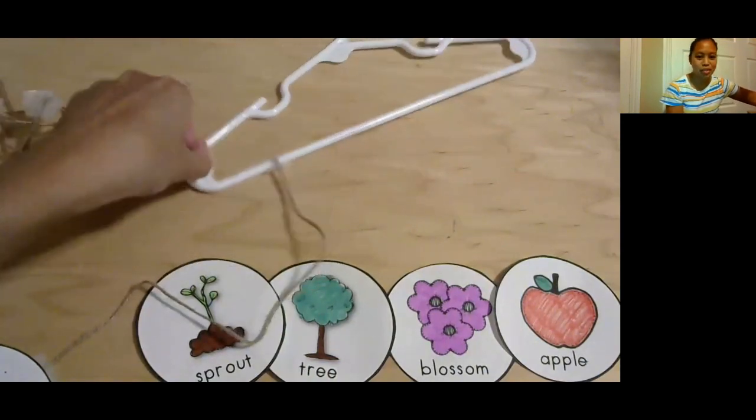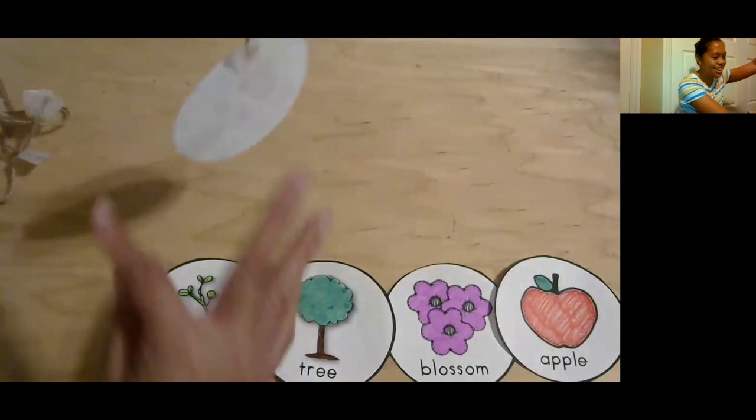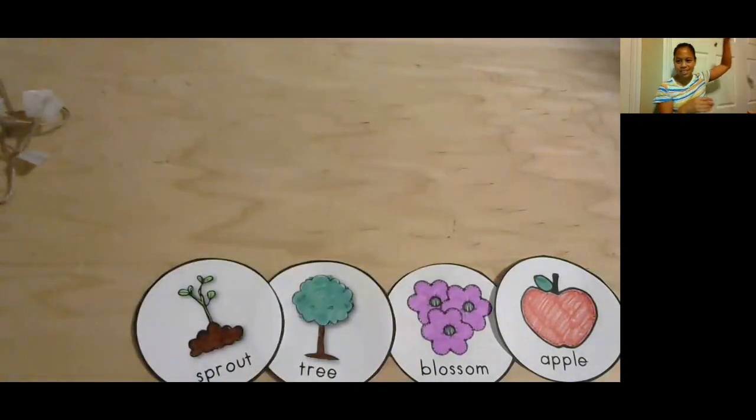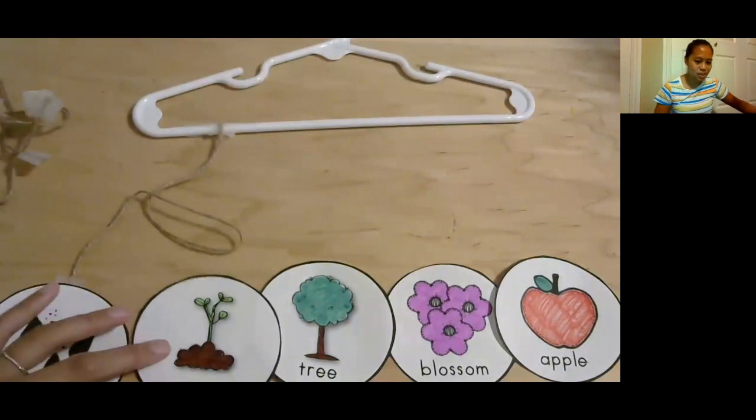Okay, you want to just pick it up for a second? We can look at it. There's our seed. Yeah, I'll put it over here so we can see it. There's our seed. Okay, so we're going to keep going, right? We have our little hanger. All right, so let's go to the next one, Sprout.